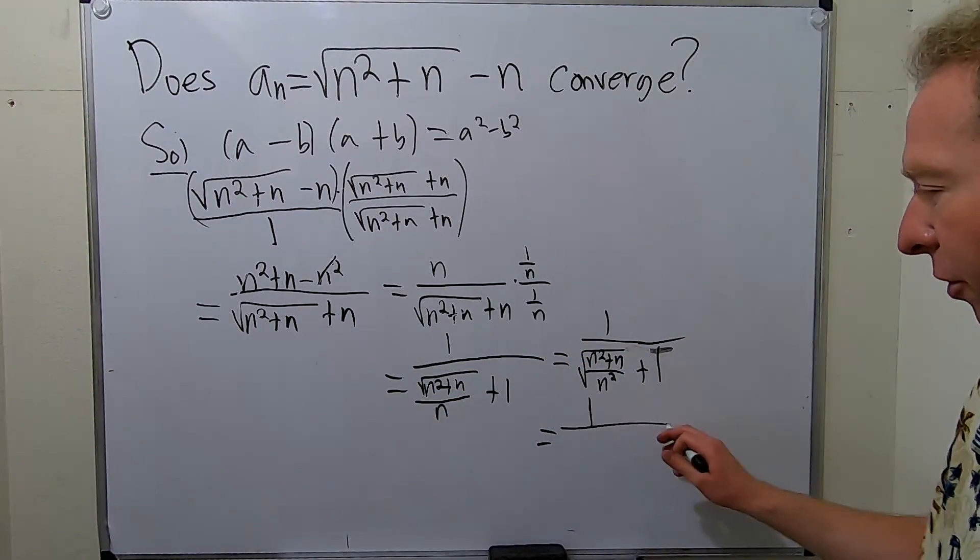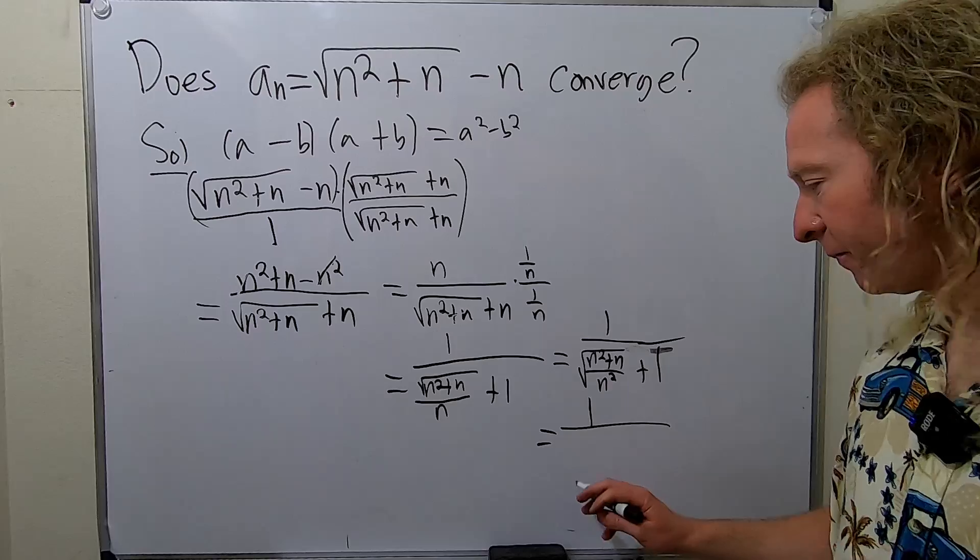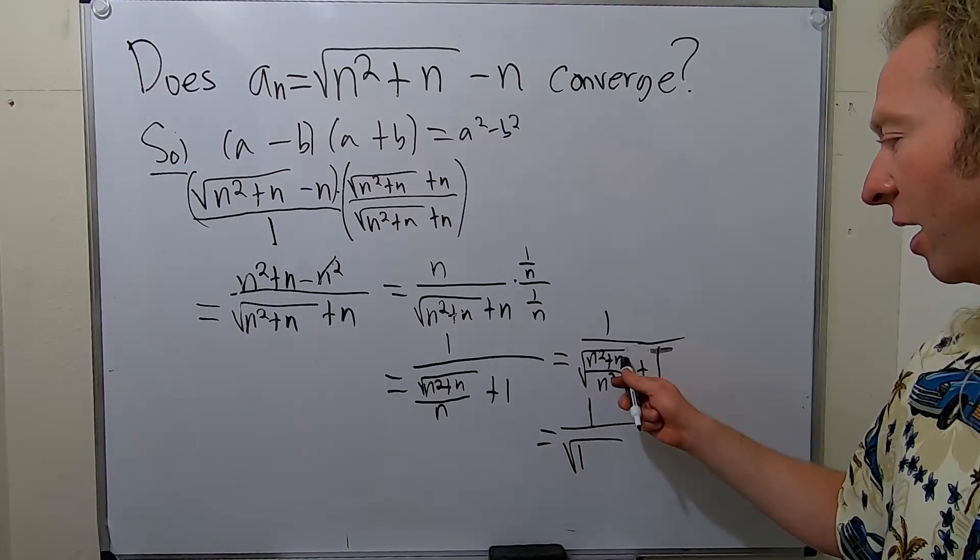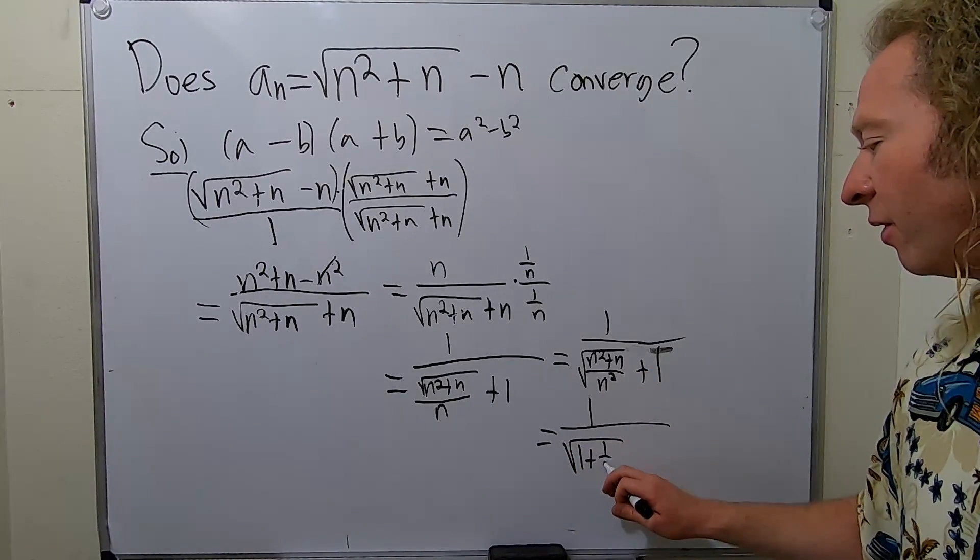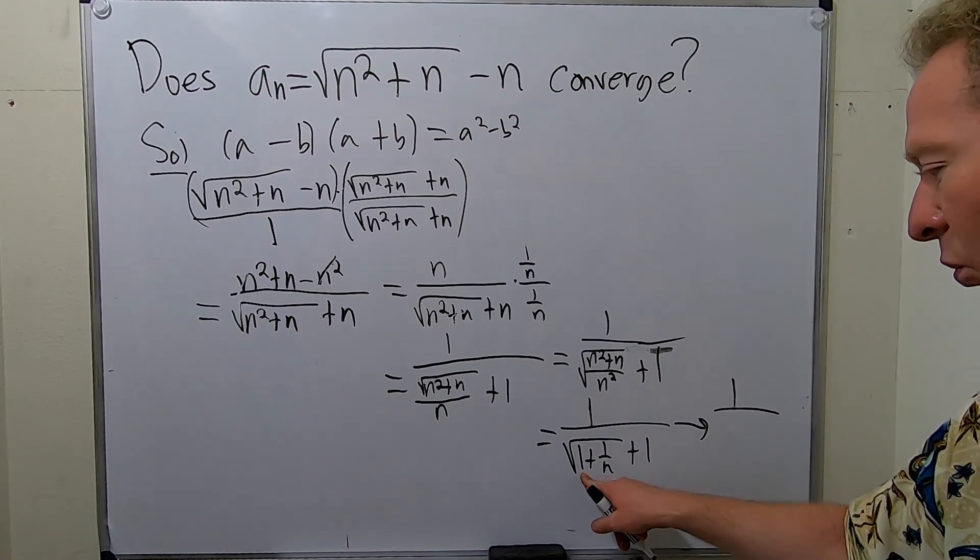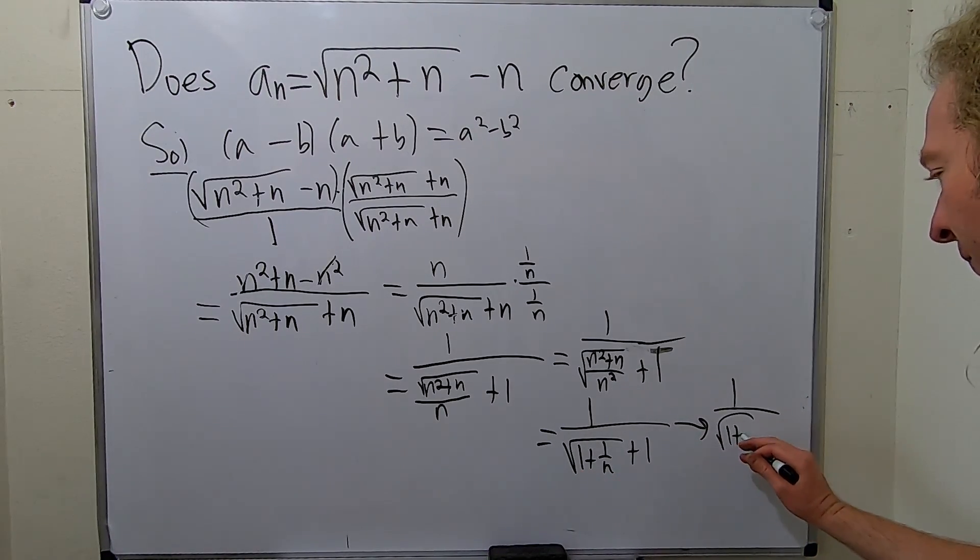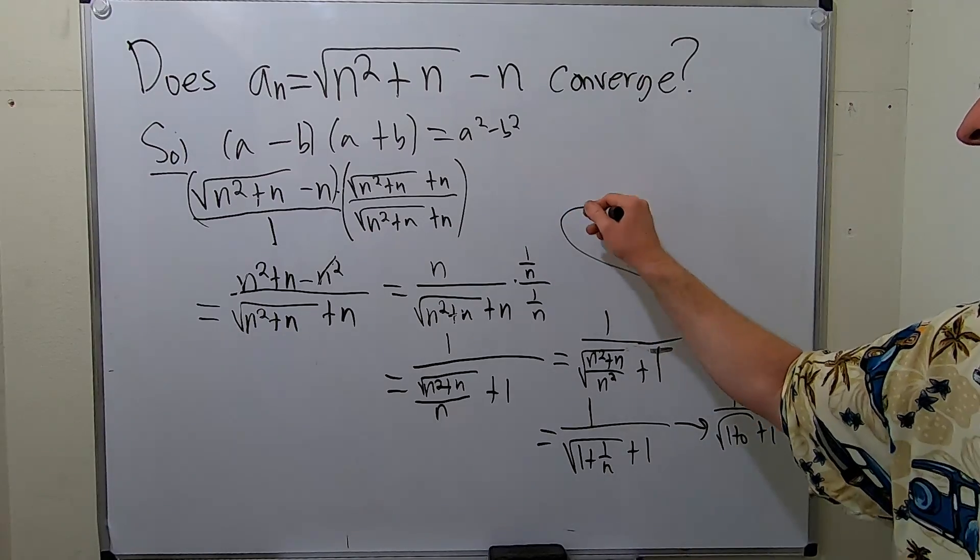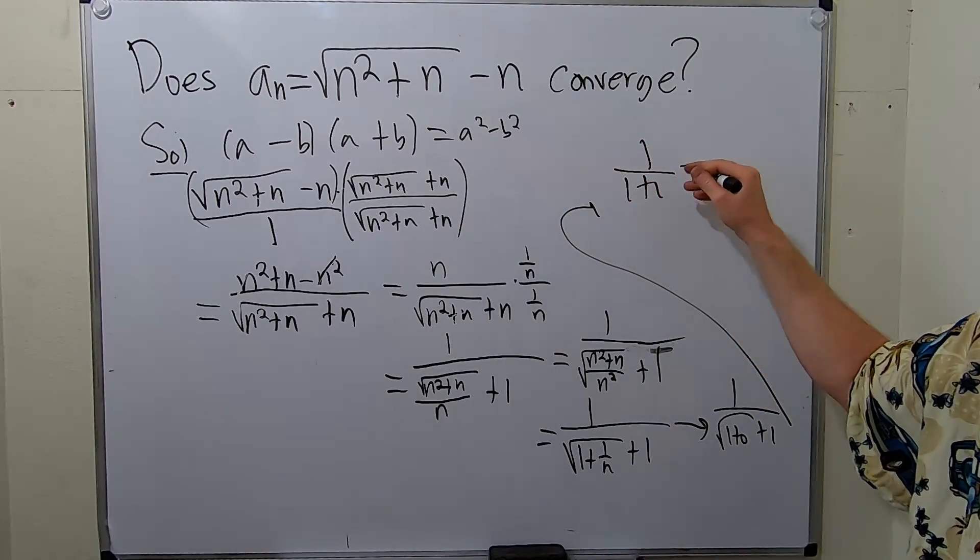This is equal to 1 over—n squared over n squared is 1, so this is 1. n over n squared is 1 over n. You have your 1. At this point it becomes clear. This approaches 1 over 1 plus 0 plus 1. That's 1 over 1 plus 1, so it's 1 half.